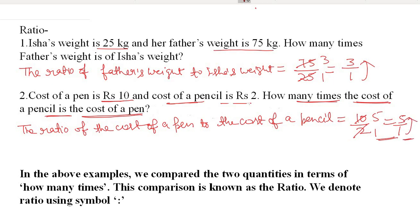In the above examples we compare two quantities in terms of how many times one is of the other. This comparison is known as ratio. We denote ratio using the symbol ':'.